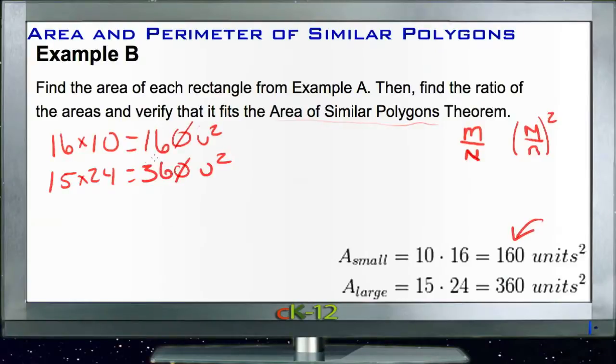And of course those both reduce by 10 right away, crossing out the zeros, so we get 16 out of 36. And 16 and 36 both divide by 2, so that would give us 8 out of 18. And those both reduce by 2, giving us 4 out of 9.